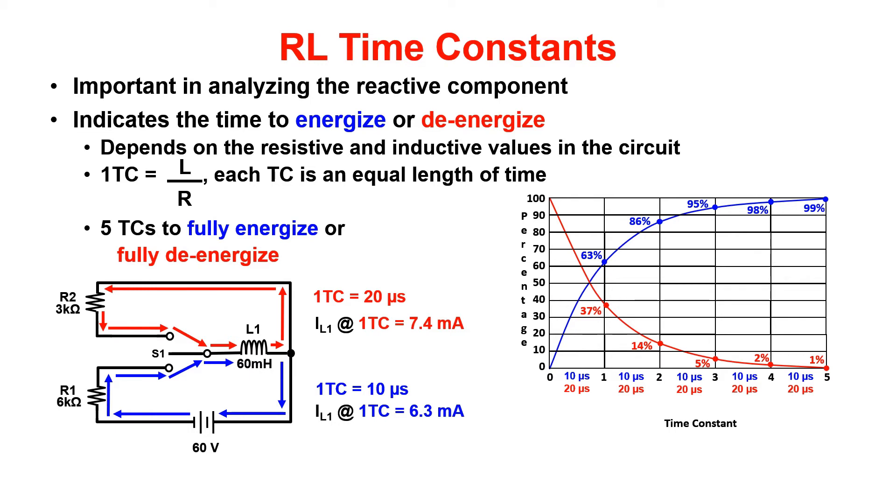In the example problem, we took 60 volts divided by 6k. Once we have IT, we take IT multiplied by our percentage at the first TC, 63%. This gives us a level of current growth at the first TC of 6.3 milliamps. Rinse and repeat for the de-energized path utilizing the components in that path.